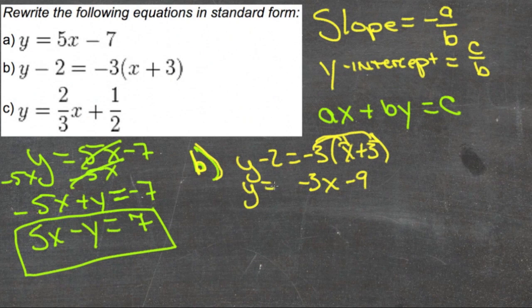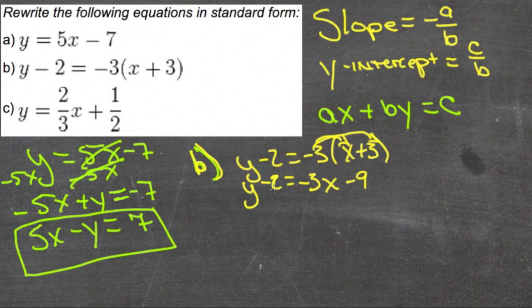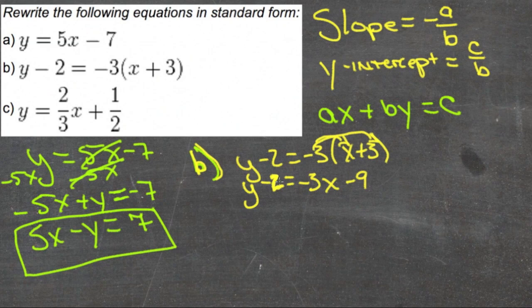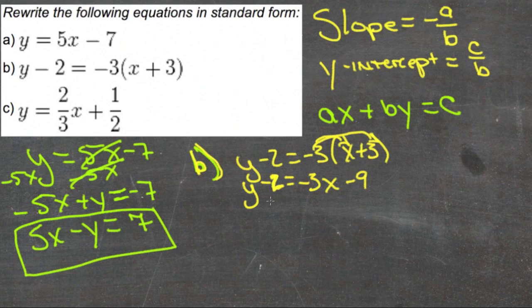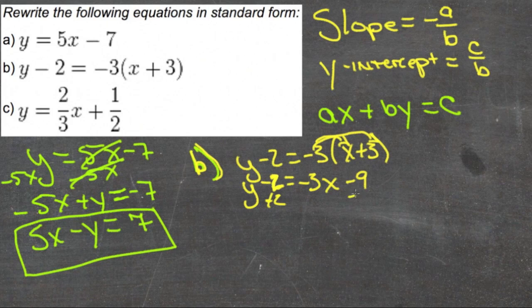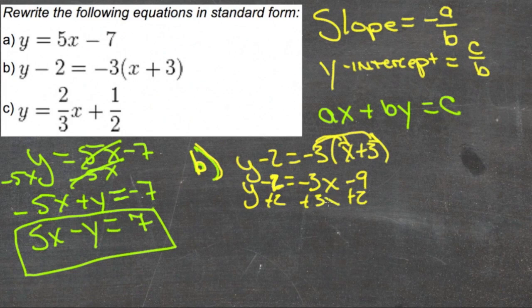Y minus 2 stays on the left-hand side for now. Then we'll combine our constants on this side and move our x over. So we'll add 2 to both sides and add 3x to both sides.